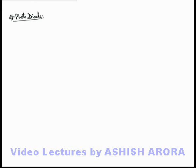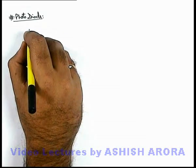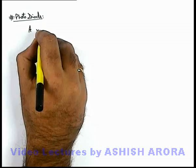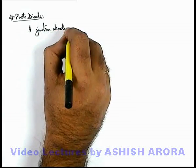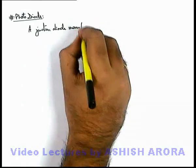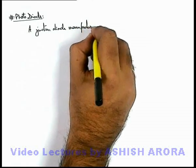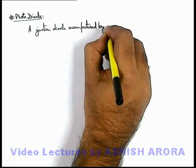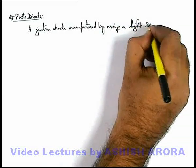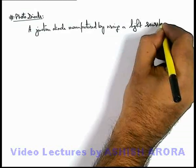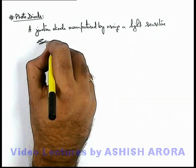Let us study about another semiconductor diode which is called a photodiode. About a photodiode, we can write that it is a junction diode, a p-n junction diode, manufactured by using a light-sensitive semiconductor.